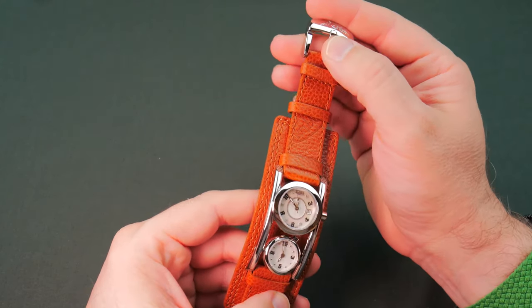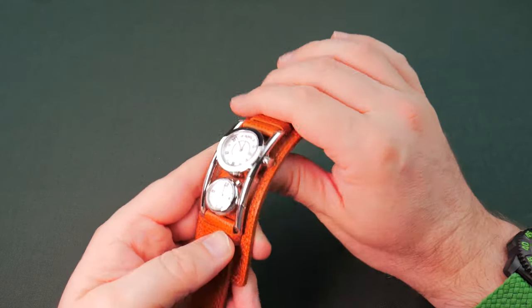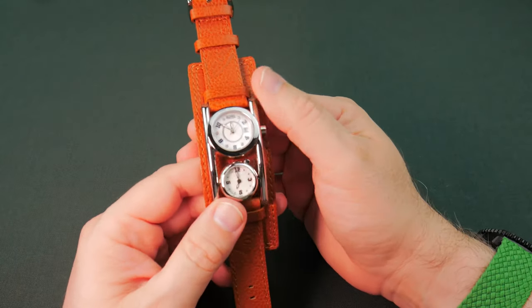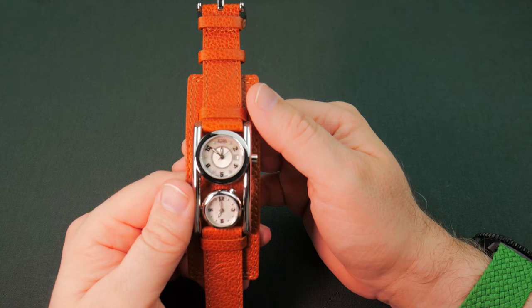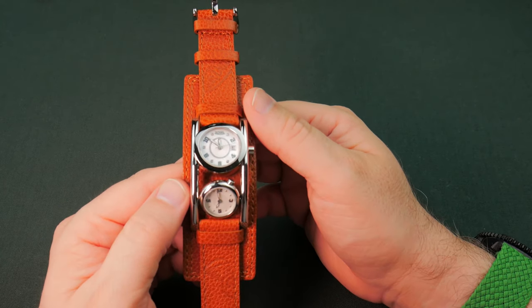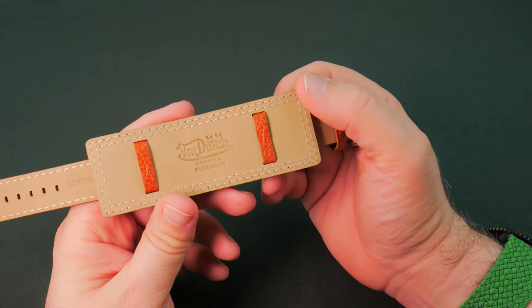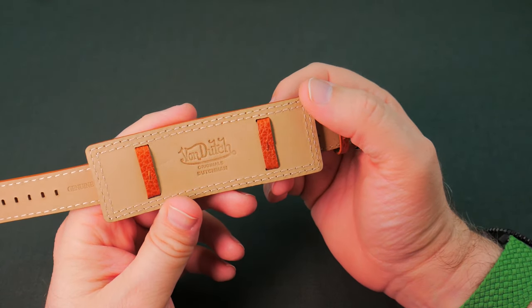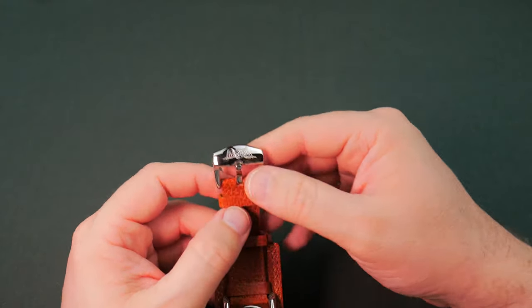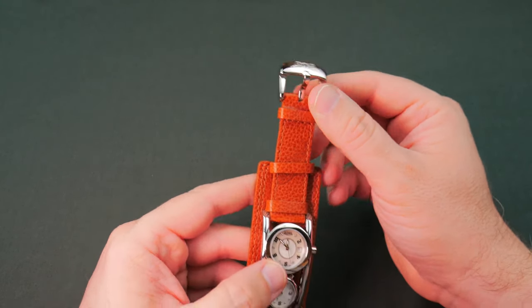So Von Dutch, if you don't know, is kind of a biker, skater fashion brand. You can class this as a fashion watch. It is definitely unique, which is why I like it. Anybody that knows me any length of time knows I like unique watches.